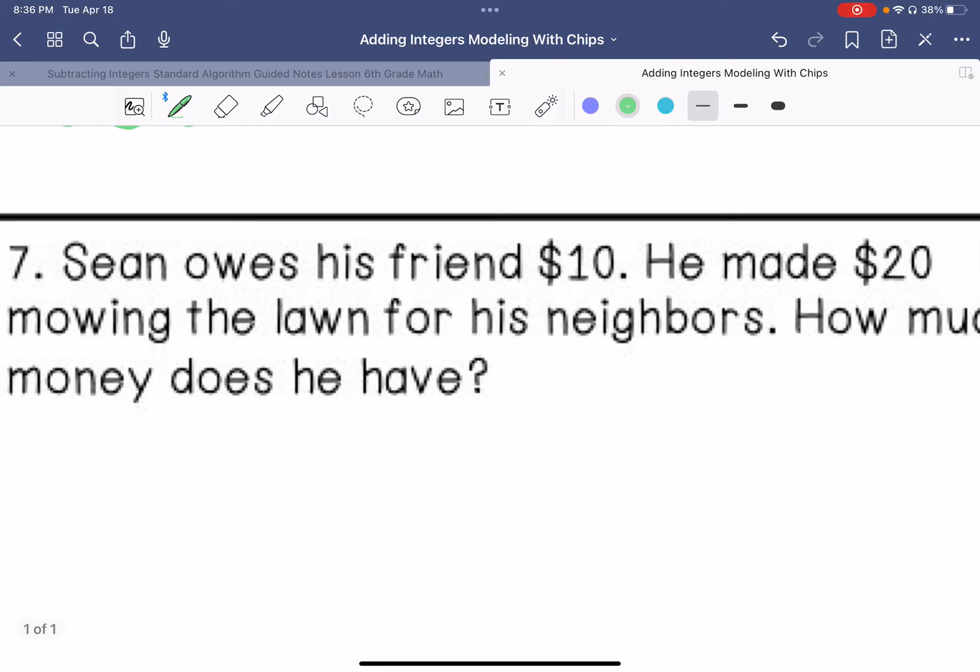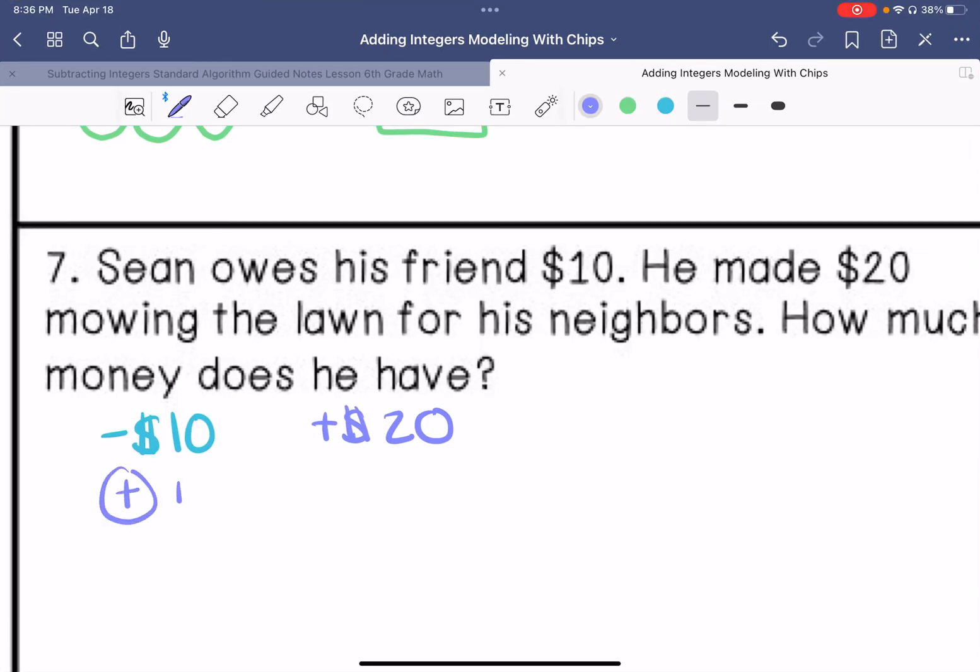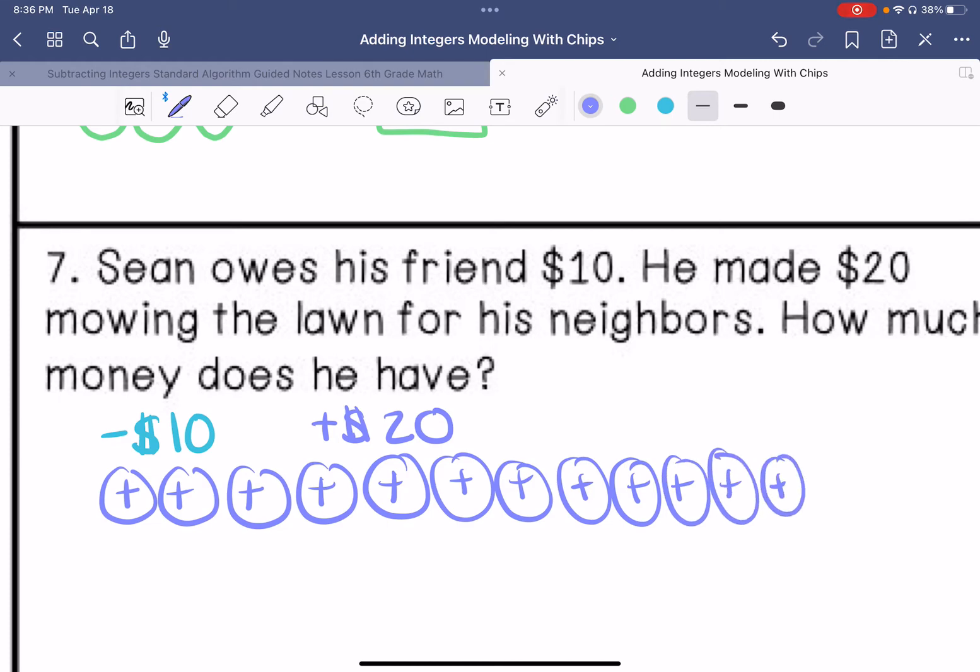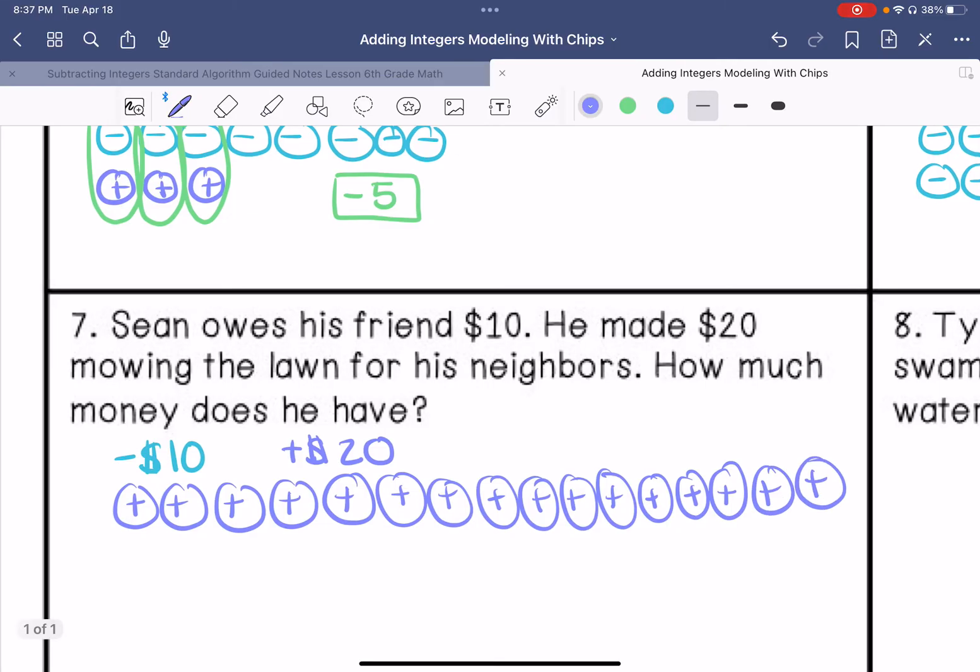Sean owes his friend $10, so that's going to be represented by a negative $10 he owes him. And then he made $20, so positive $20 mowing the lawn for his neighbors. How much money does he have? So we are going to have 20 positives.